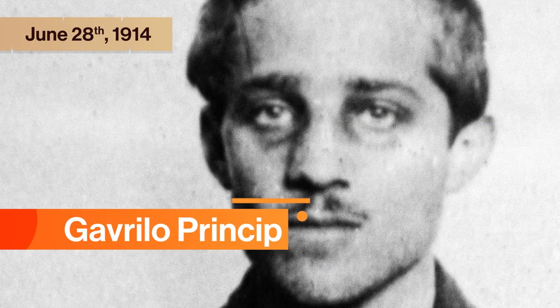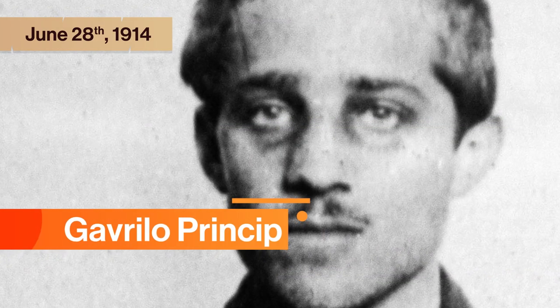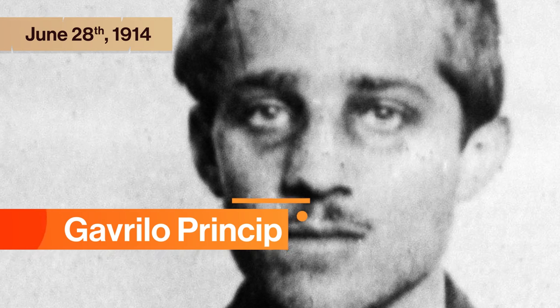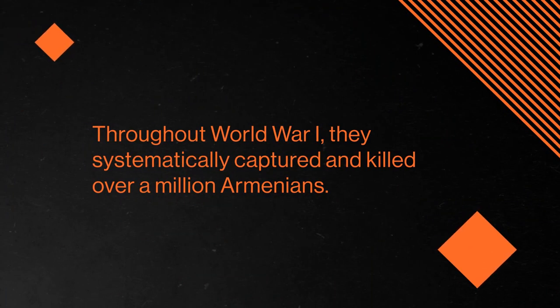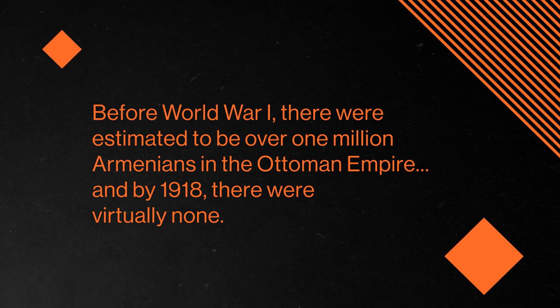And one of these attacks was successful — not only at hitting the target, but at shaking up the political landscape of all of Europe. On June 28, 1914, in the capital of Bosnia-Herzegovina, Serbian nationalist Gavrilo Princip assassinated the heir to the Austrian throne, Franz Ferdinand — the Archduke, not the rock band. In this moment, the series of conflicts and wars that had torn apart the Ottoman Empire and splintered the Balkans quickly turned into the First World War, swallowing all of Europe in a conflict over national pride and power. And that previously inclusive Ottoman Empire? Well, throughout World War I, they systematically captured and killed over a million Armenians. Before World War I, there were estimated to be over one million Armenians in the Ottoman Empire, and by 1918, there were virtually none.